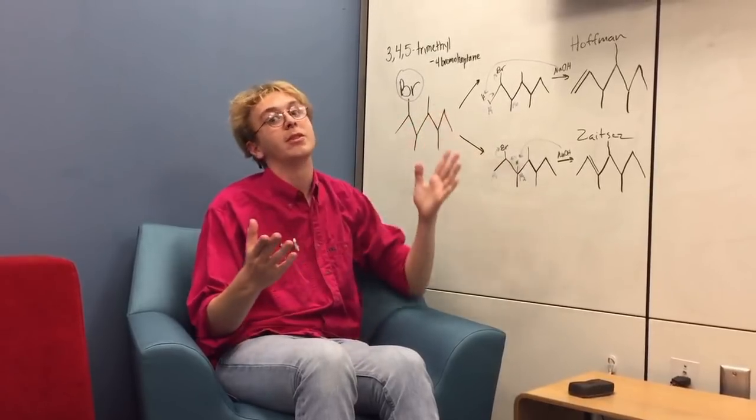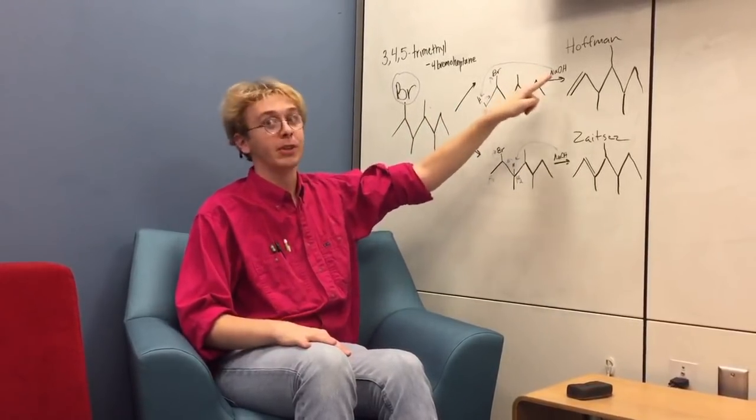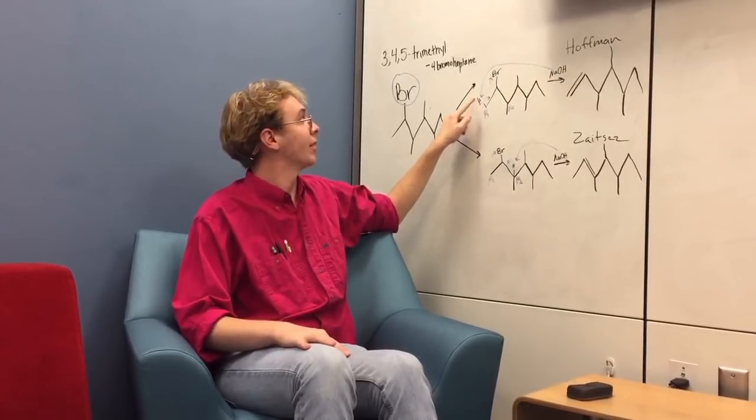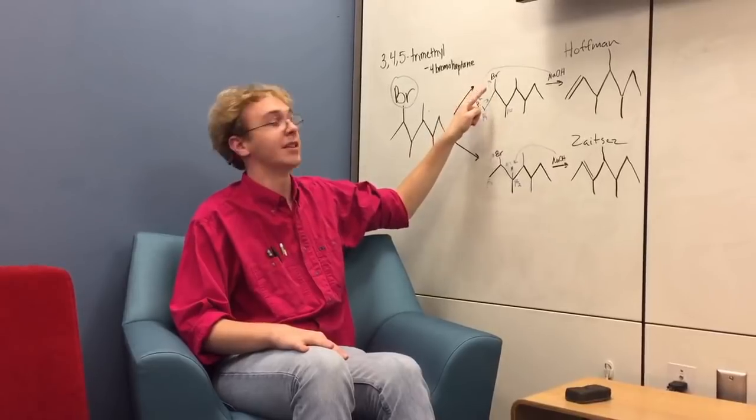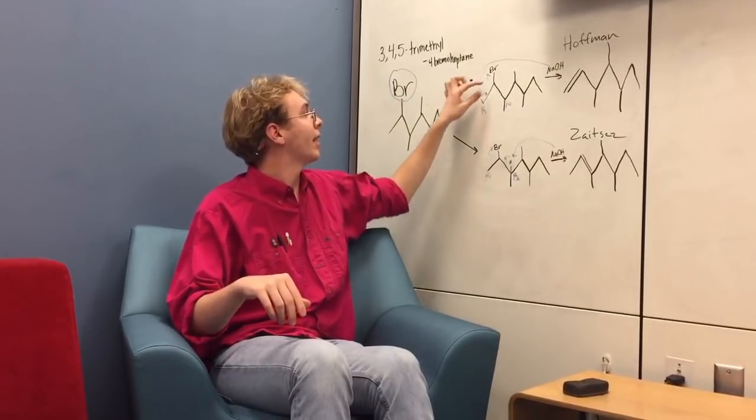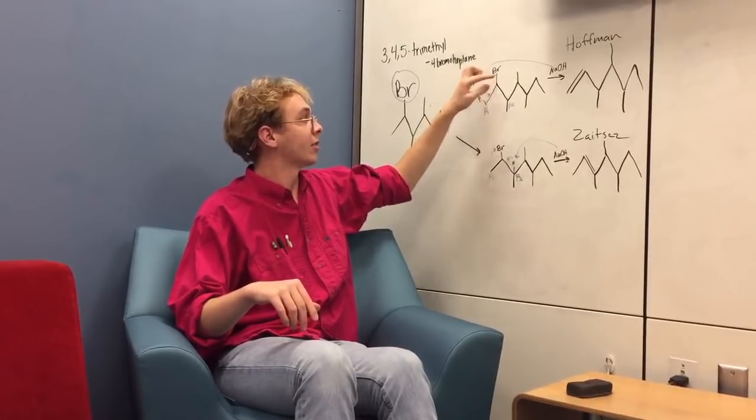And now I'm going to explain to you an E2 process in general. A strong base like sodium hydroxide will react with hydrogen in a hydrogen transfer that will then cause the leaving group to leave, in this case bromine. And this happens all in one step. And after that, of course, a pi bond is formed between the electrons.